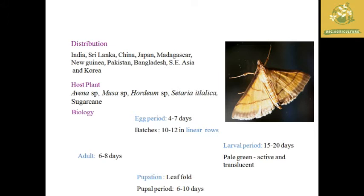Host plants include Oryza sativa, Musa species, and sugarcane family. Biology: egg period is around 4 to 7 days, eggs are laid in batches of 10 to 12 in rows. Adult life period is 6 to 8 days. Pupation occurs only in the leaf fold stage. Pupal period is 6 to 10 days, larval period is 15 to 20 days. The larva is pale green and actively transparent.